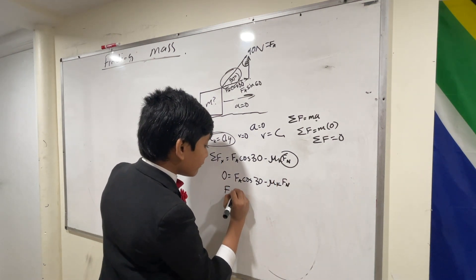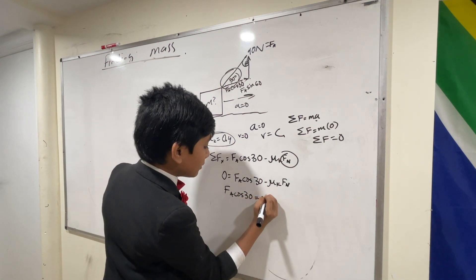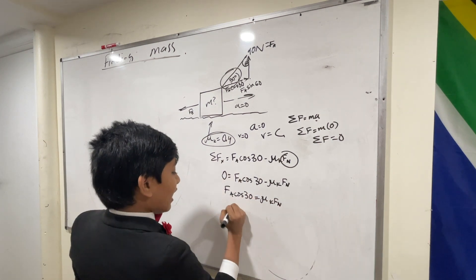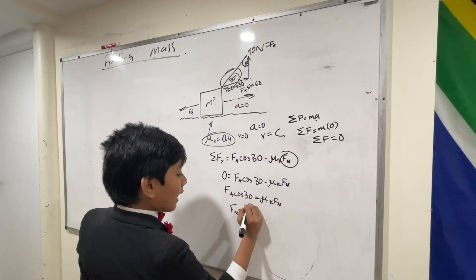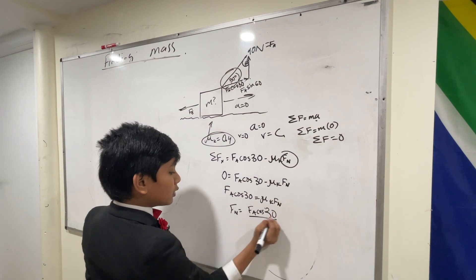And furthermore, fn is equal to f a cosine 30 over mu k.